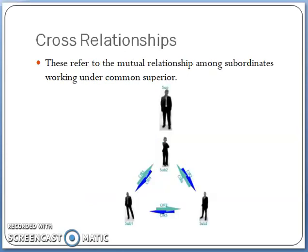The third type of span of management relationship, as explained by Graicunas, refers to the mutual relationship among subordinates working under a common superior. It is similar to the direct-single relationship, but here the superior has a relationship with the subordinate, and subordinates also have interrelated relationships and conduct among themselves.